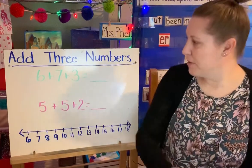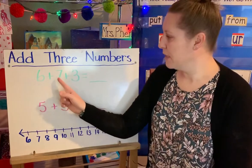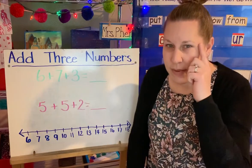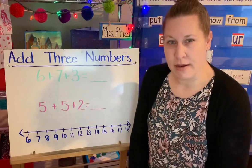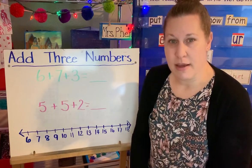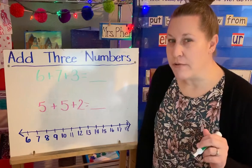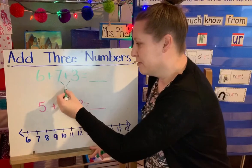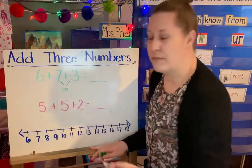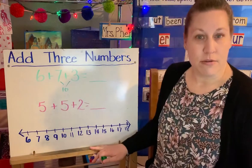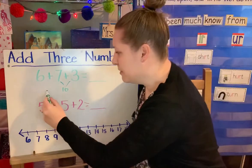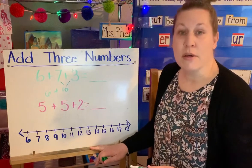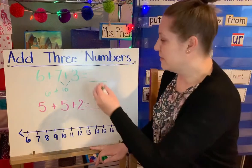This first one says 6 plus 7 plus 3. I'm thinking about my ways to make 10, my combinations for 10. And if I think really hard, I remember that 7 plus 3 is a way to make 10. So I know that part equals 10. So now the problem I have to do is 6 plus 10, or 10 plus 6, which I know is 16.